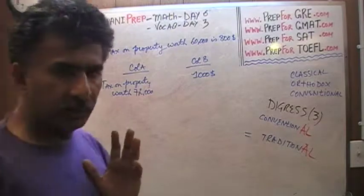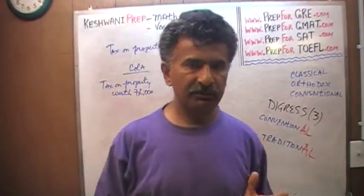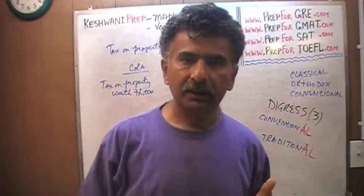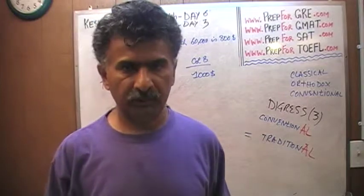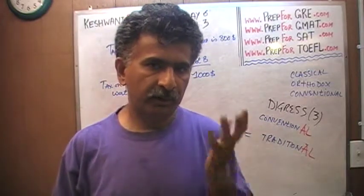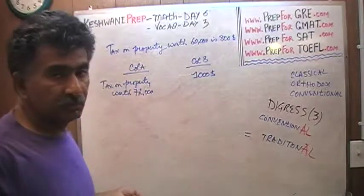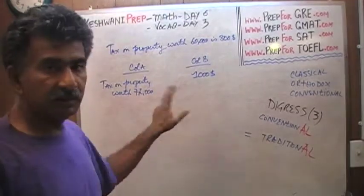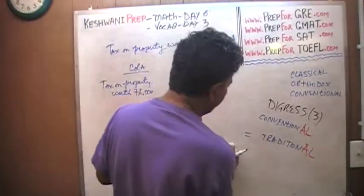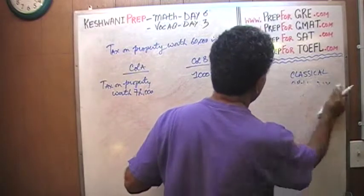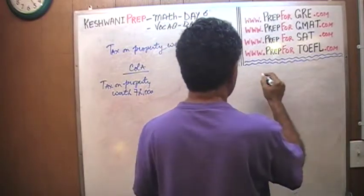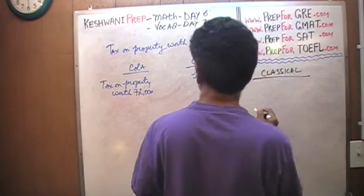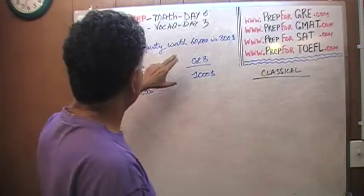This is the tag you want to put in if you want to look for any particular day: Keswani Prep dash Vocab dash Day 3, and this digress will pop right up. Anyway, that was a bit of a digression. So there are two ways to solve this problem. One is what I call the conventional way, the traditional way, the orthodox way, the classical way, the geeky way, the nerdy way, the academic way, the way your math teacher will expect to solve the problem. And then there is another way which I call the quick and dirty way. Which way should we do first? Let's do the conventional way first, so that you can appreciate the difference between the two approaches.